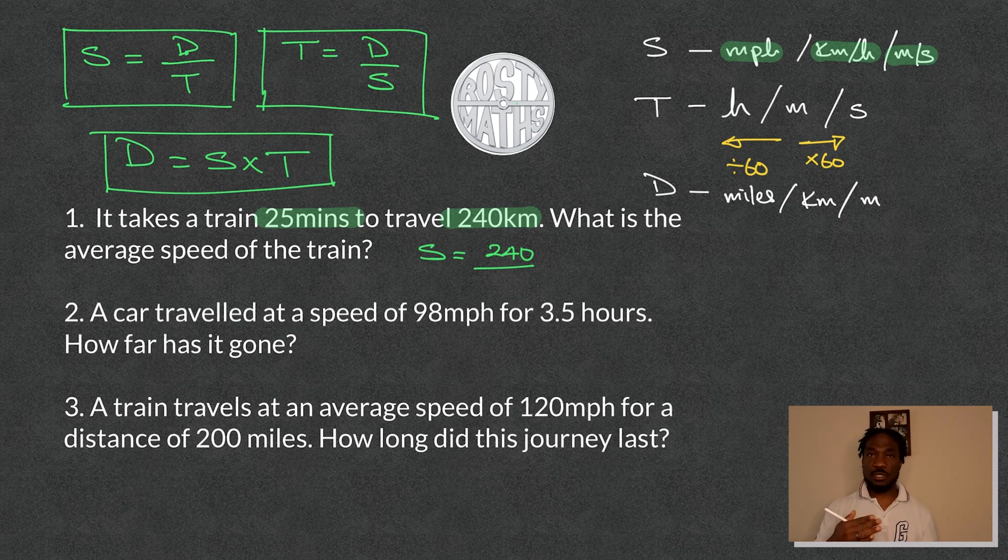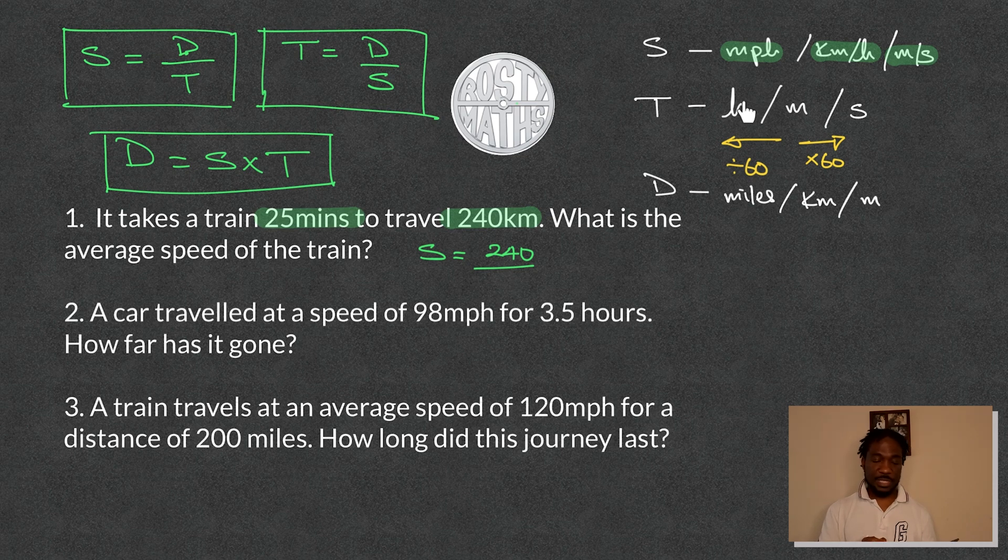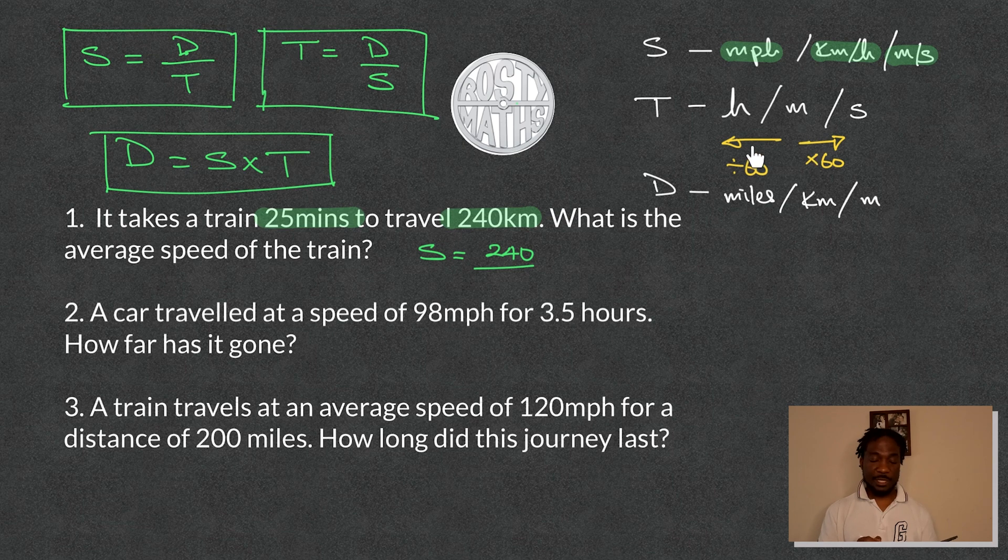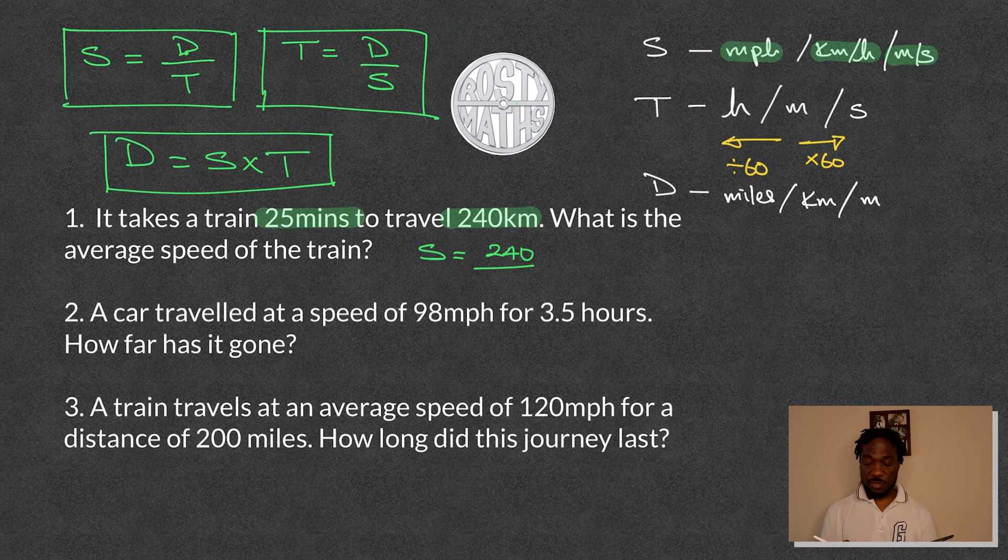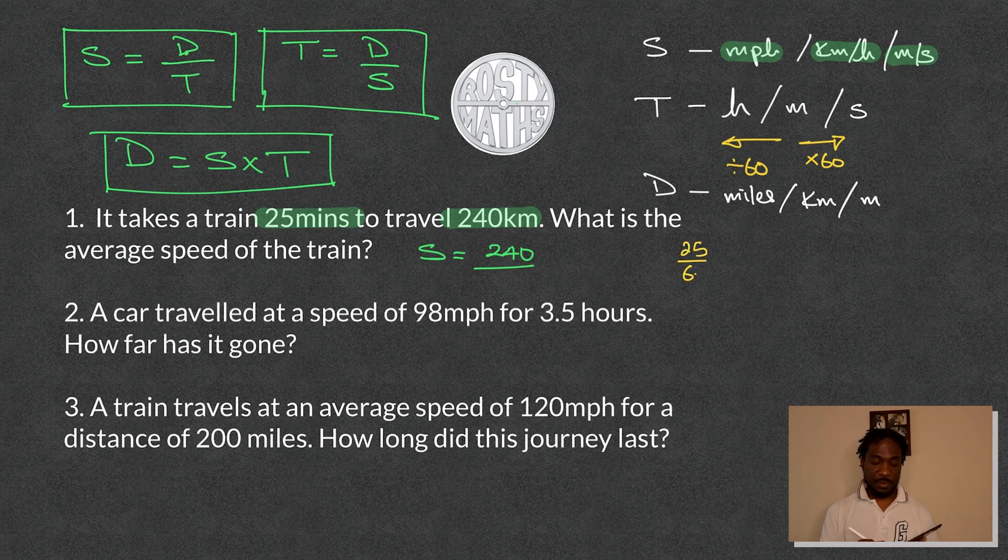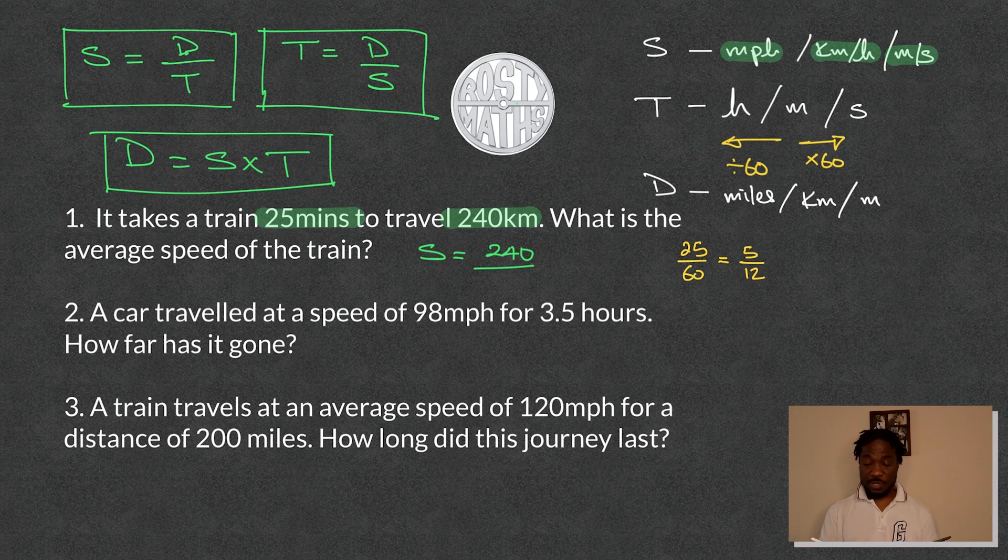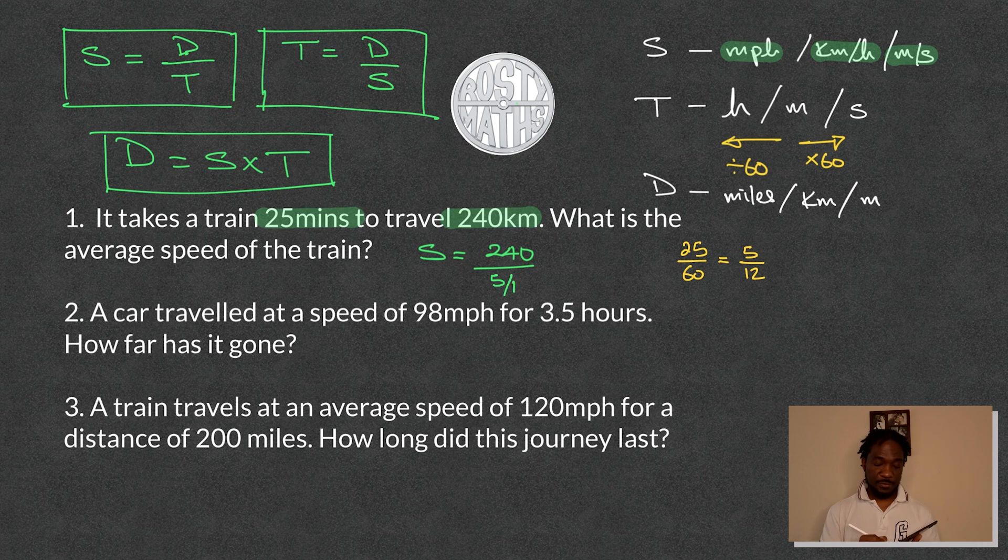I can't put 25 minutes in here because as we said at the beginning, if it's in minutes, I need to either change it to seconds or hours. But because this is in kilometers, I will need to change it to hours. And how do I change it to hours? I divide by 60. So let's do some work on the side. So that's going to be 25 divided by 60. If I divide that by 5, I'm going to get 5 twelfths for now. And so that's what I'm going to use in my calculations. So I'm going to be 240 divided by 5 twelfths.